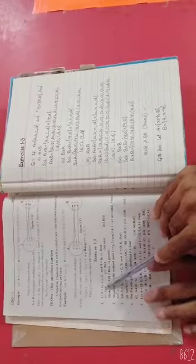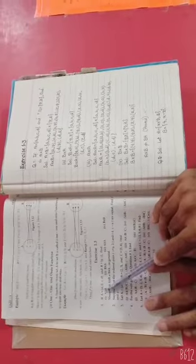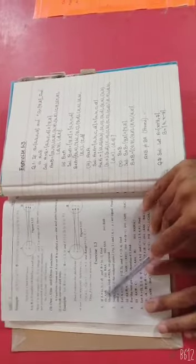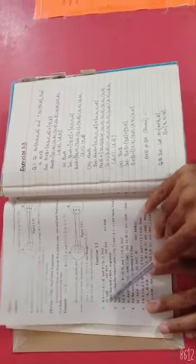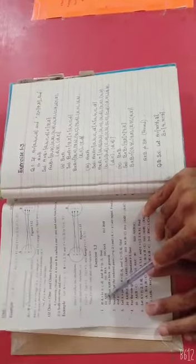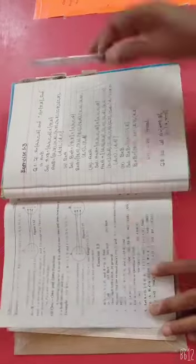Cross means cartesian product. A cross B - A cartesian product of B. The method to find this is very easy.